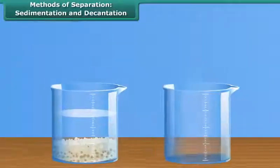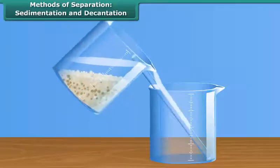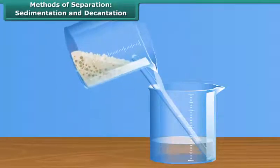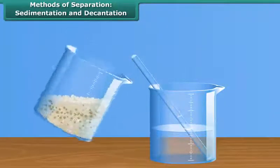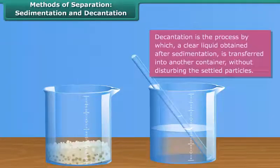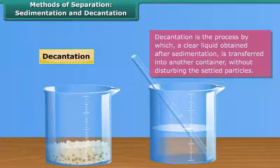Jack separated the upper layer of water from the mixture by gently pouring the clear water into another beaker without disturbing the sediment. This process of separation of a liquid from the sediment is called decantation.